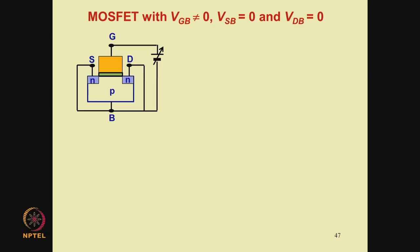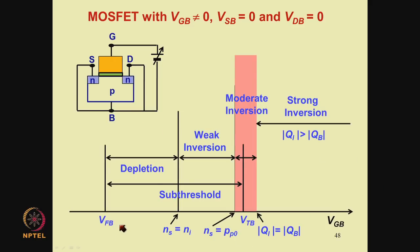In a previous course titled Solid State Devices, in lectures 33 to 41, we have already discussed a first-level model which includes a qualitative theory for the MOSFET. Towards the beginning of this module, we have been summarizing the key features from those lectures so that we can proceed further and develop a more advanced model of the MOSFET. So far we have discussed the conditions in a MOSFET with VGB applied, but source-to-bulk and drain-to-bulk are shorted. We identified the following regimes of operation for this device.